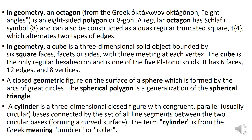A cube is a three-dimensional solid object bounded by six square faces, facets, or sides, with three meeting at each vertex. The cube is the only regular hexahedron and one of the five Platonic solids. It has six faces, twelve edges, and eight vertices.